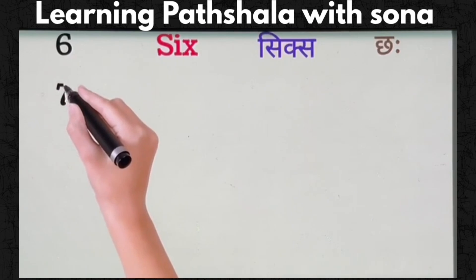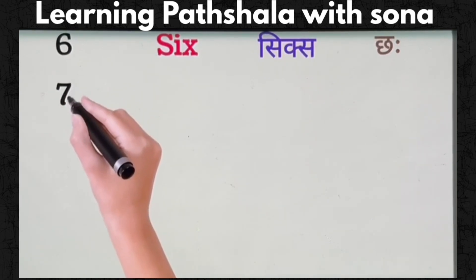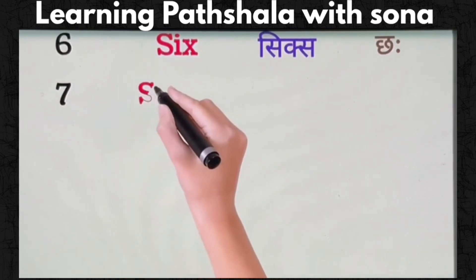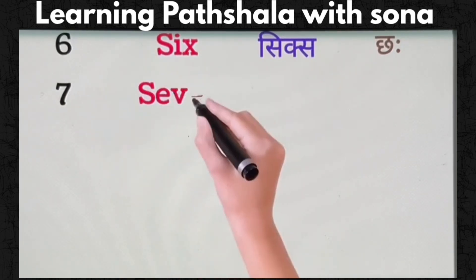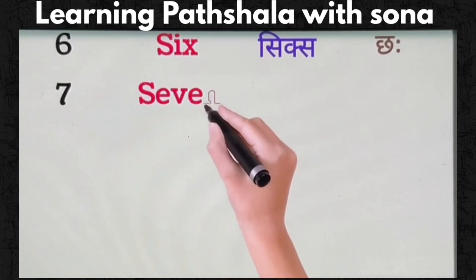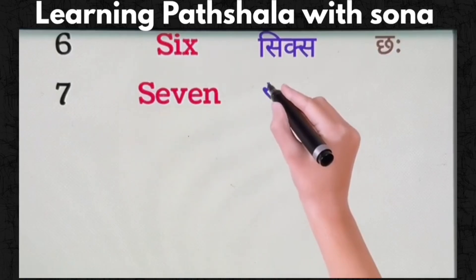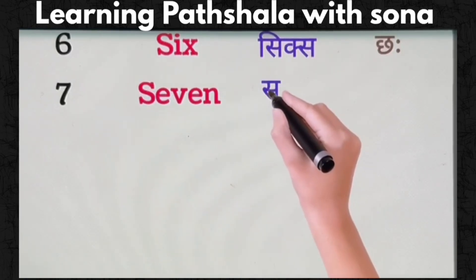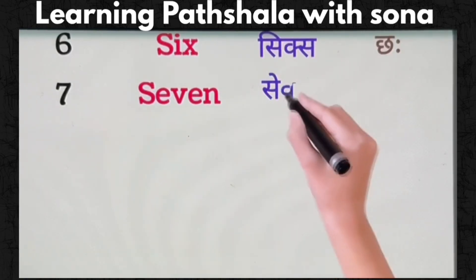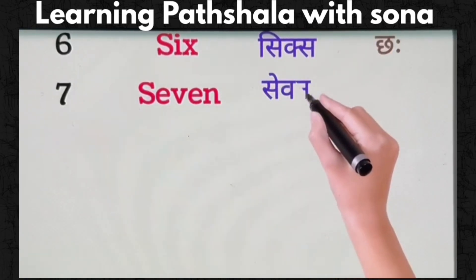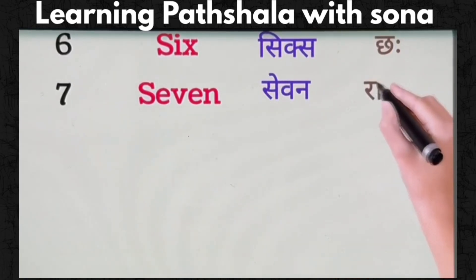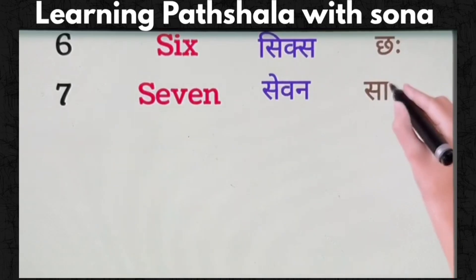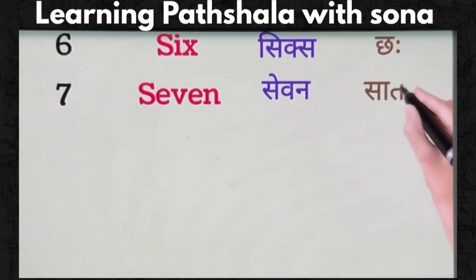Seven. S-E-V-E-N. This is number seven. Seven means saath.